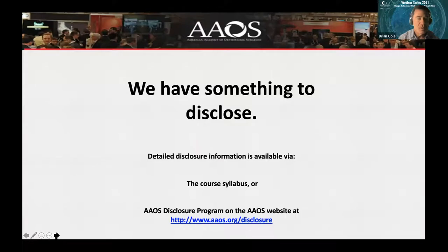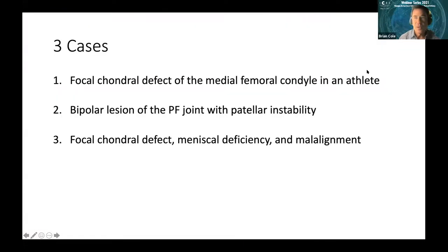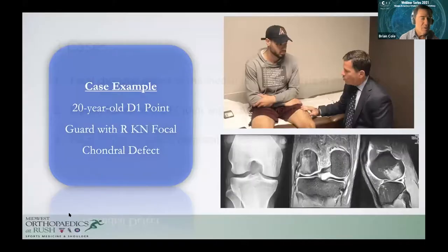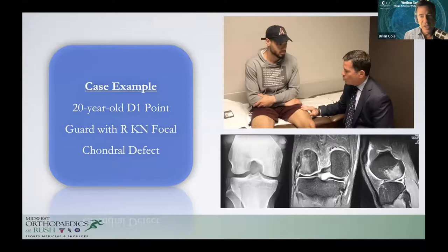We will allow question and answer through the Q&A chat box at the bottom right, assuming time permits. We're going to review three cases in ascending level of difficulty. The first case will be a focal cartilage defect to the medial femoral condyle on an athlete. The second will be a bipolar lesion to the patellofemoral joint in an individual with patellar instability, and the third will be a chondral defect in someone with meniscus deficiency, ACL issues, and malalignment.